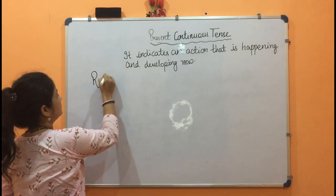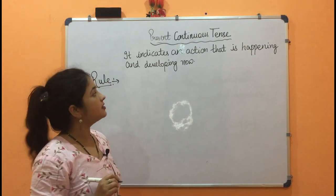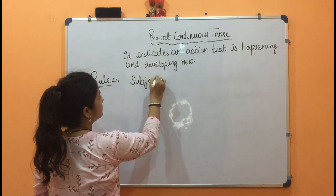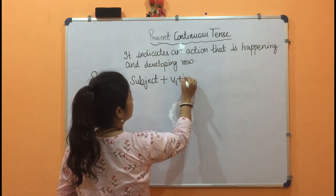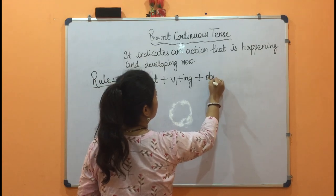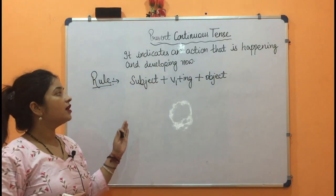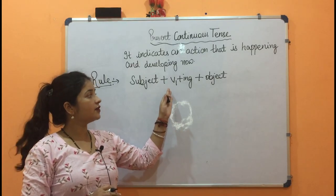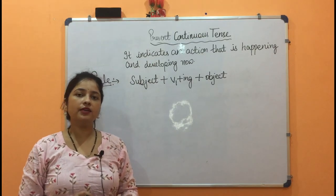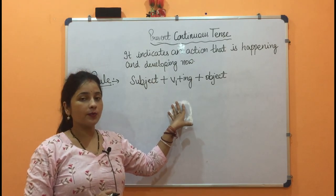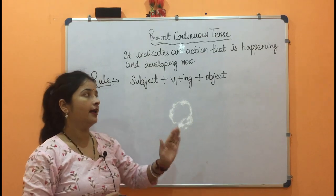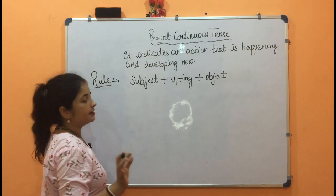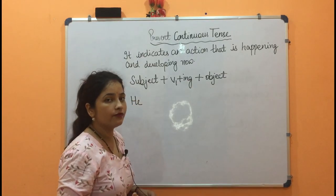First of all, what is the rule of the present continuous tense? The rule is: Subject + Helping Verb + Verb's first form + ing + Object. In simple present we used to add 's' or 'es' with singular subjects, but in present continuous we add 'ing' with the verb's first form — meaning the action is continuing.